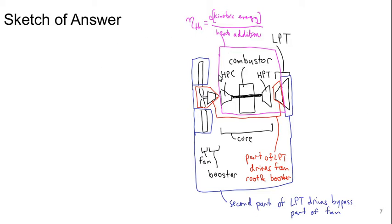Really this purple box ought to include this red shape here as well. So really what we're capturing is essentially everything except the fan part that goes through the bypass and the part of the low pressure turbine that drives that.